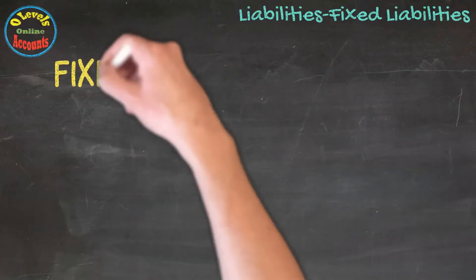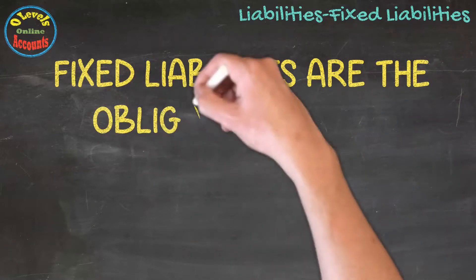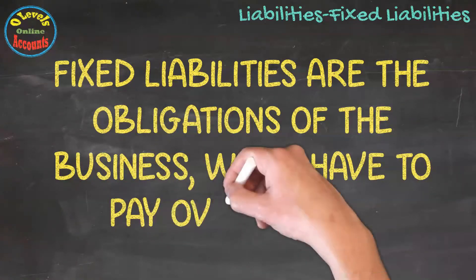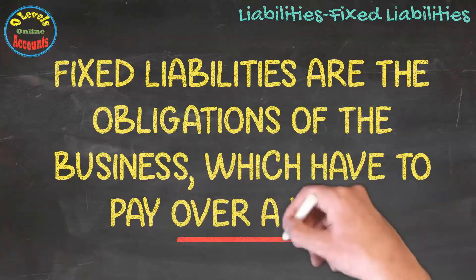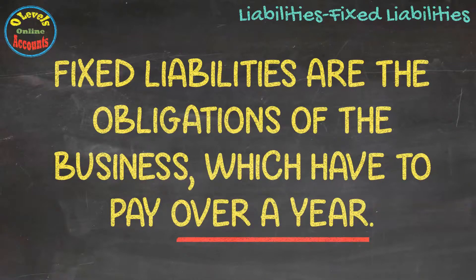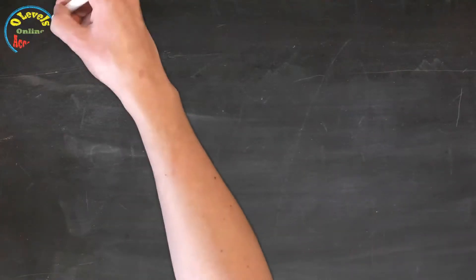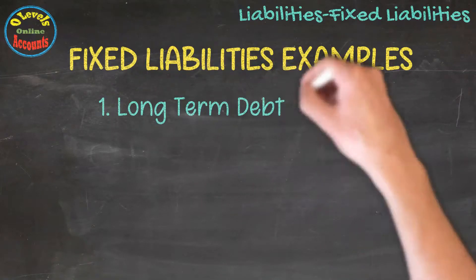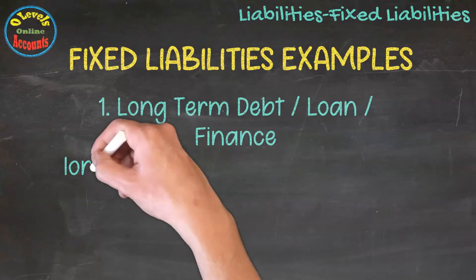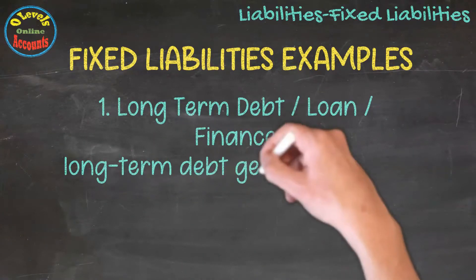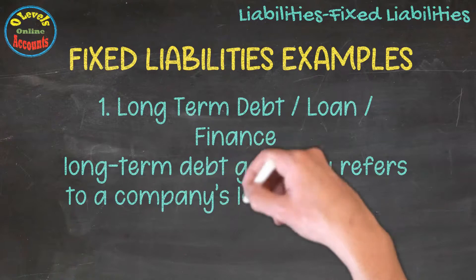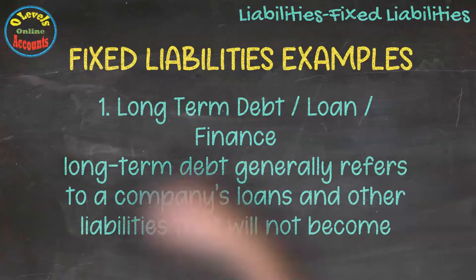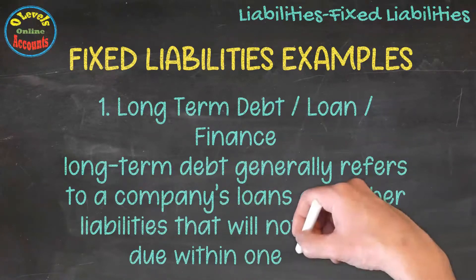Fixed liabilities are the obligations of the business which have to be paid over a year. Let us look at its examples. The first example of fixed liabilities is long-term debt, loan, or finance. Long-term debt generally refers to a company's loans and other liabilities that will not become due within one year.